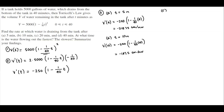For part C, where T is equal to 20 minutes, V prime of 20 is going to equal negative 250 times (1 minus 1/40 times 20), and that gives us negative 125 gallons per minute.